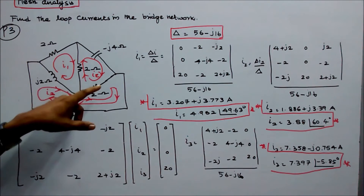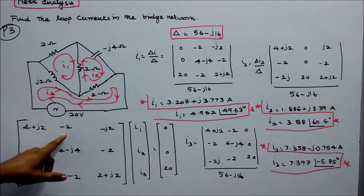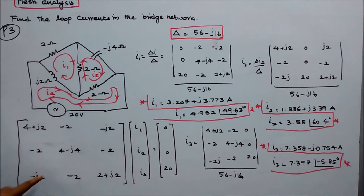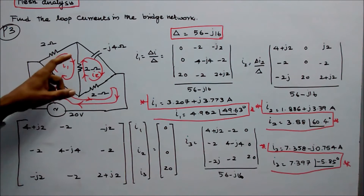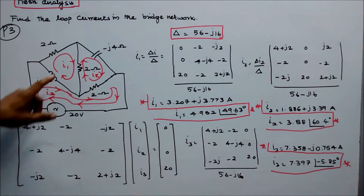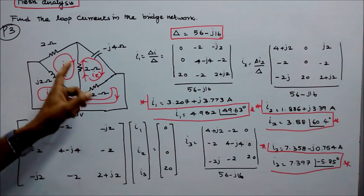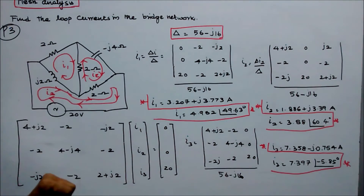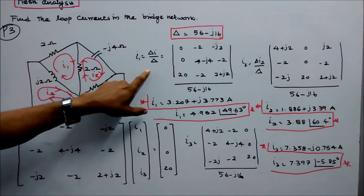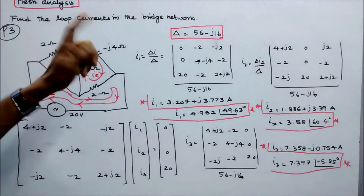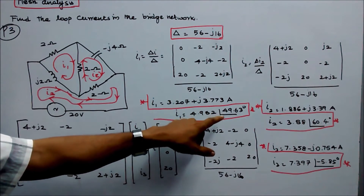The element common to loops 1 and 2 is 2, with opposite current direction, so the off-diagonal entry is minus 2. The element common to loops 1 and 3 is minus j2, with opposite direction, giving minus j2. The element common to loops 2 and 3 is 2, giving minus 2. Loops 1 and 2 have no source (zero); loop 3 has a source of 20. Delta = 56 minus j16. Solving, i1 = 3.207 + j3.773 amps (rectangular), or 4.952 angle 49.63 degrees (polar).